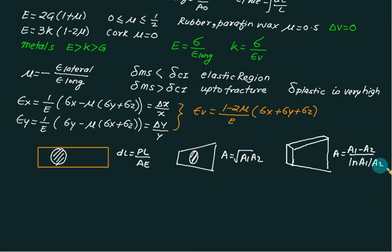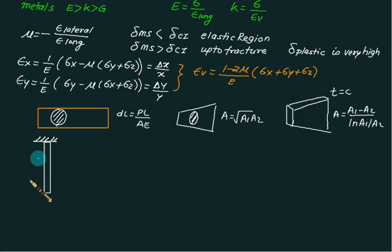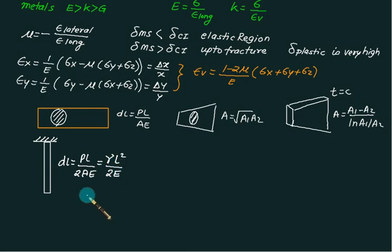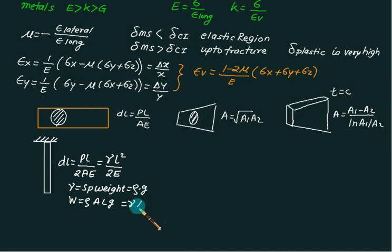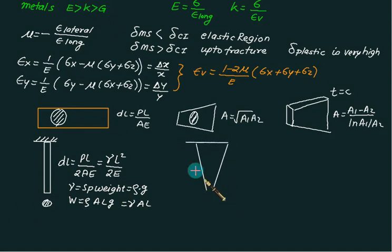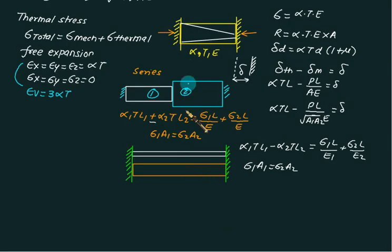If you have a vertical bar fixed at a hinge, there is elongation due to self-weight given by δL = PL/(2AE) = γL²/(2E), where γ = ρg is the specific weight. For a tapered bar under self-weight, the elongation is γL²/(6E). The weight of the bar is ρ·A·L·g = γ·A·L.